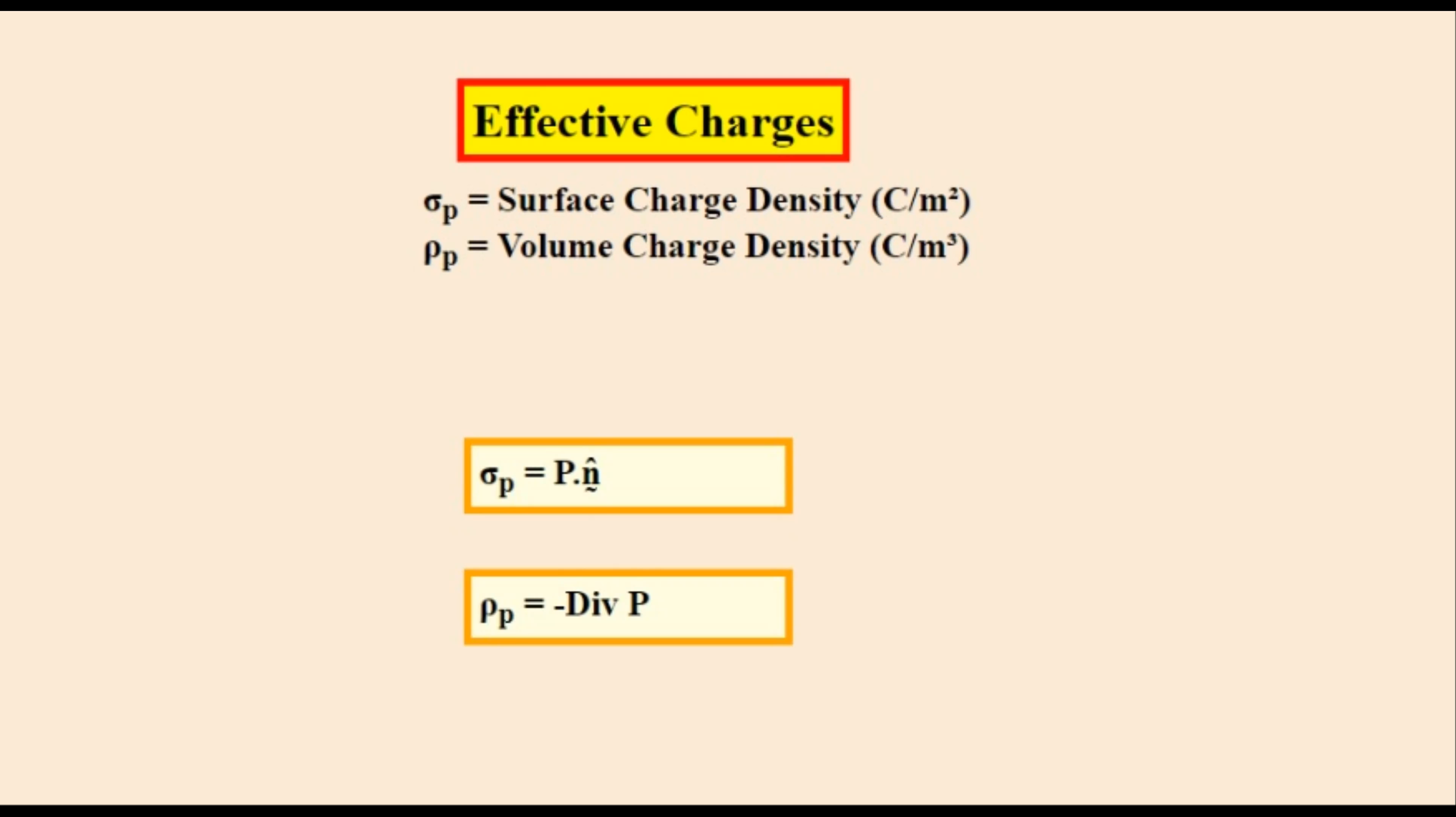The unit N vector is the unit vector that is perpendicular to the surface of the object. P is the polarization of the object that is a function of the position of a certain point in space.